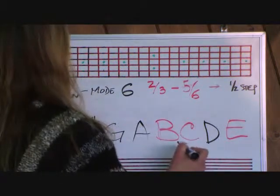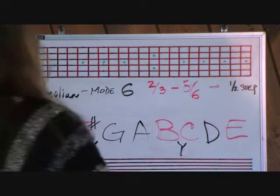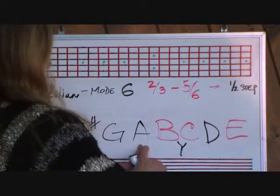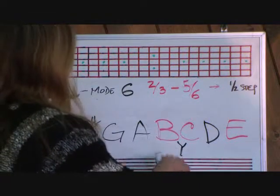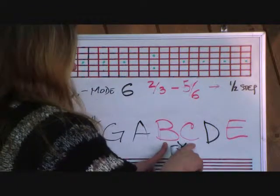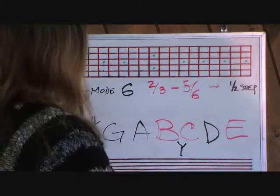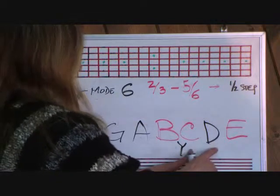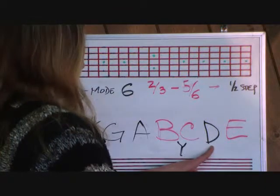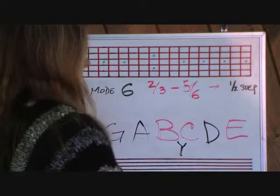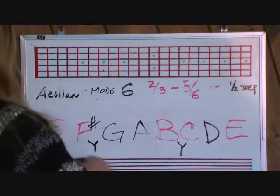Fourth to fifth step, A to B, is a whole step, so you leave that one alone. Moving on to the fifth step of the scale, B to C — you need to have a half step according to the formula. It is a half step, so you don't need to do anything. Seventh step of the scale, C to D, needs to be a whole step — that is a whole step, so you don't need to do anything. D to E needs to be a whole step — it is a whole step, so you leave that one alone as well. There's your E Aeolian on the chart.